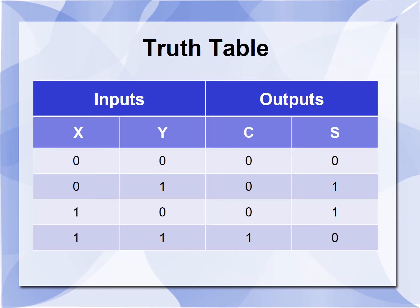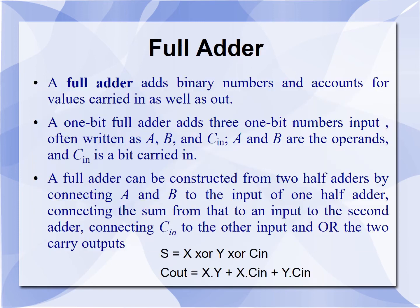Truth table for the half-adder: X and Y are the inputs, and carry C and sum S are the outputs. When X=0, Y=0, carry=0, sum=0. When X=0, Y=1, carry=0, sum=1. When X=1, Y=0, carry=0, sum=1. When X=1, Y=1, carry=1, sum=0.